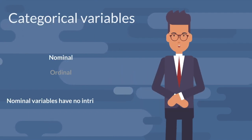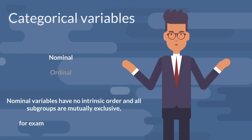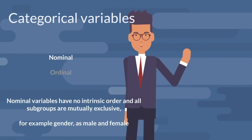Nominal variables have no intrinsic order and all subgroups are mutually exclusive, for example gender, as male and female.